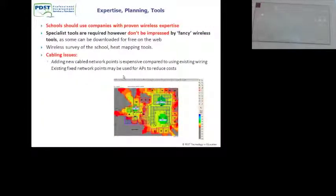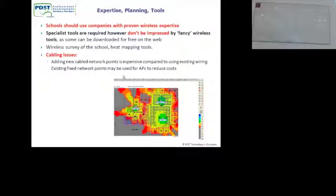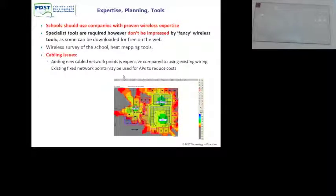Don't be impressed by someone coming in with fancy tools and gadgets saying they can model and simulate your whole school — you can download that stuff on the internet. Cabling is actually going to be a big cost of the wireless installation. What all wireless companies typically do is plug access points into your existing cabling infrastructure, saving the cost of new cables. If you're putting in a new network, it needs to be CAT6.